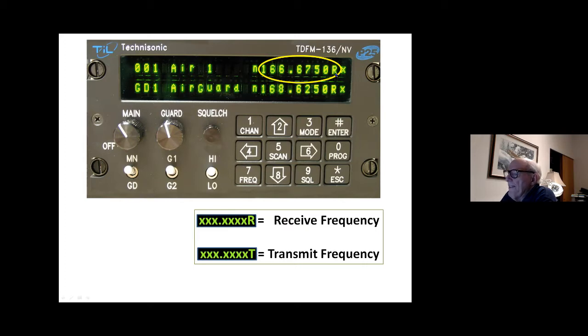Moving over to the right, you've got your actual frequency readout, the megahertz and the kilohertz. And then at the end, you'll have a little R or an X. It'll be R when you're receiving. And when you key the transmitter, that will change to a T. And then it will show the transmit frequency. Of course, on the repeater, they're different. On simplex, they're the same. So that's what the R or the T means at the end of the frequency digits.